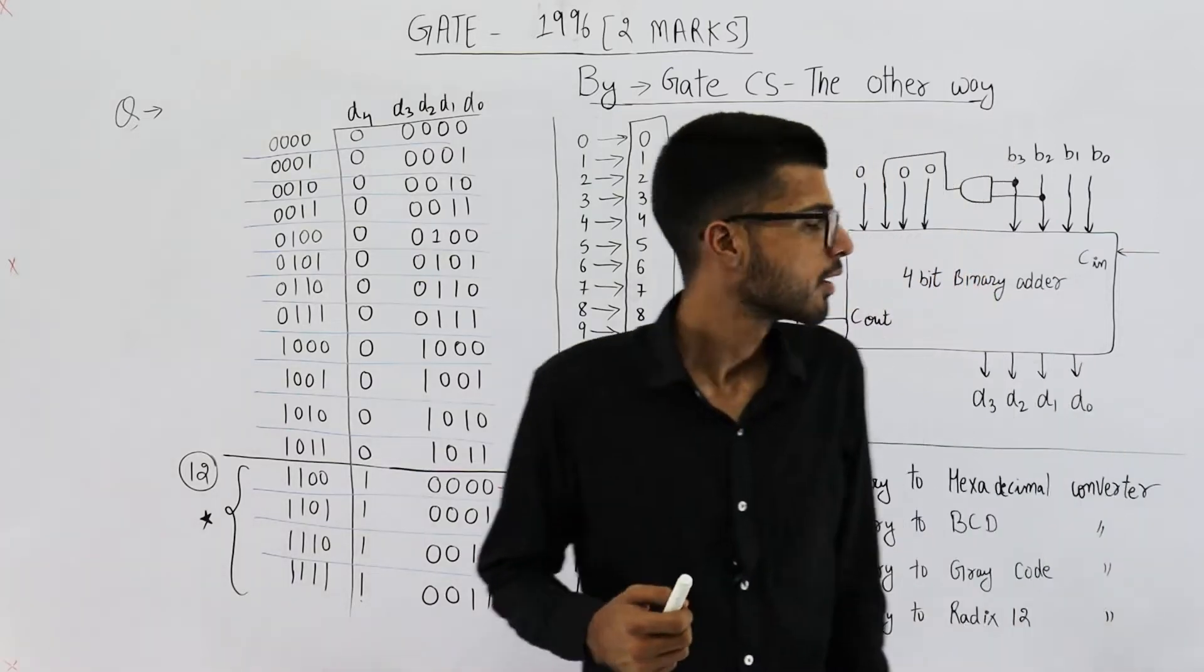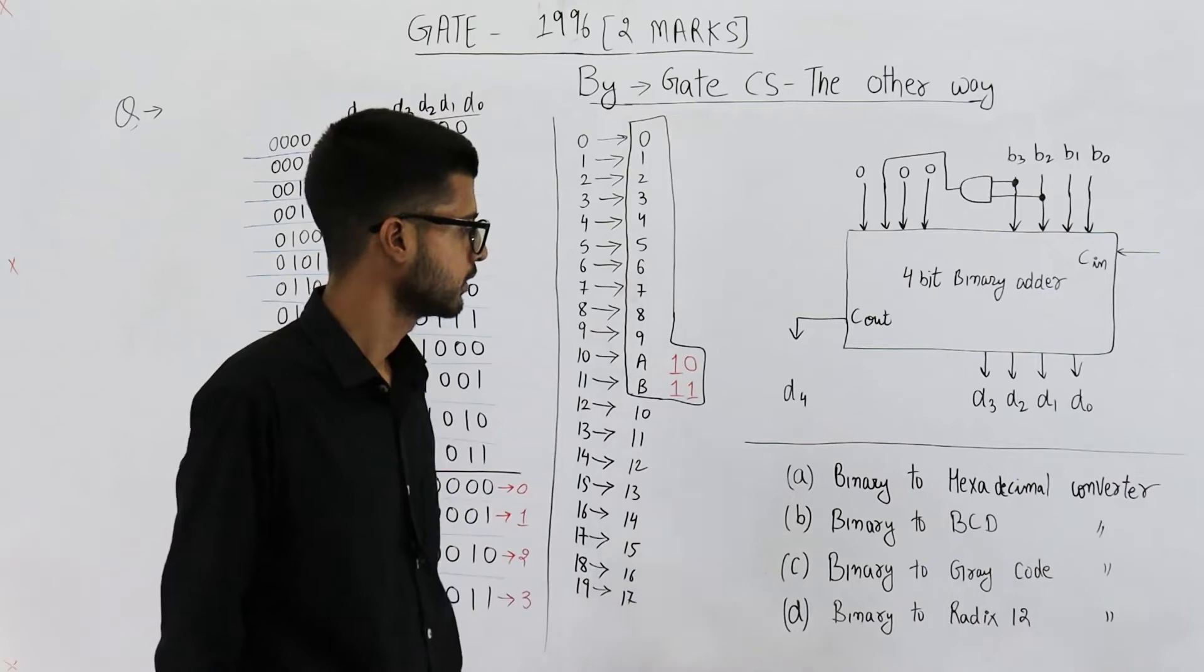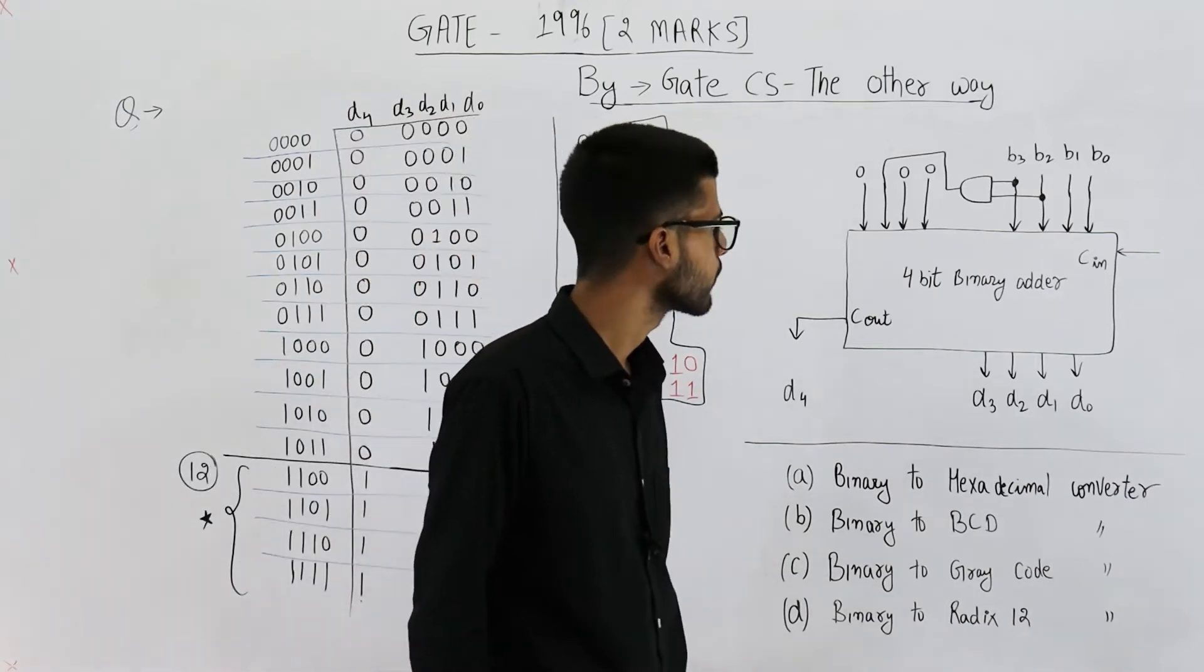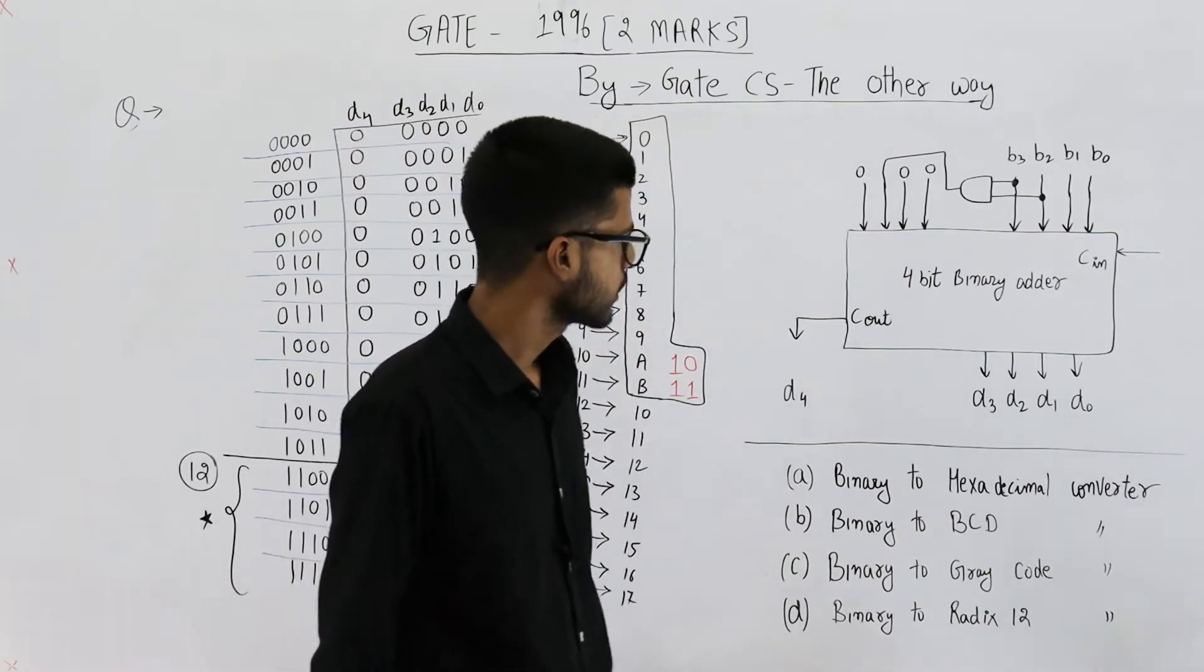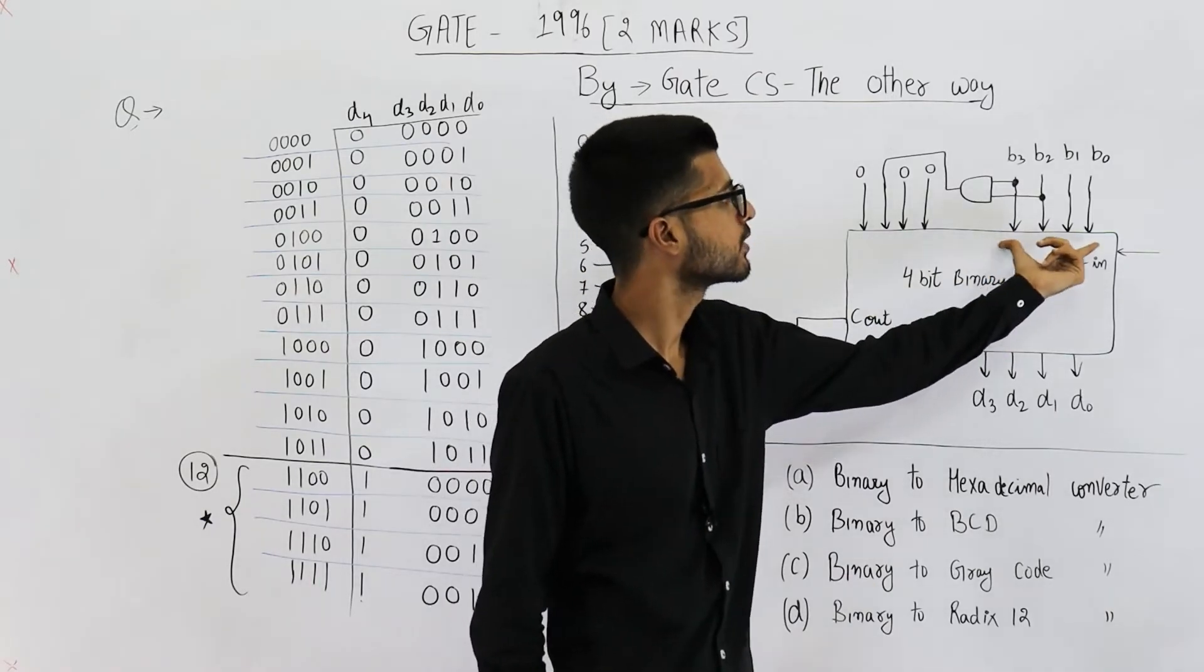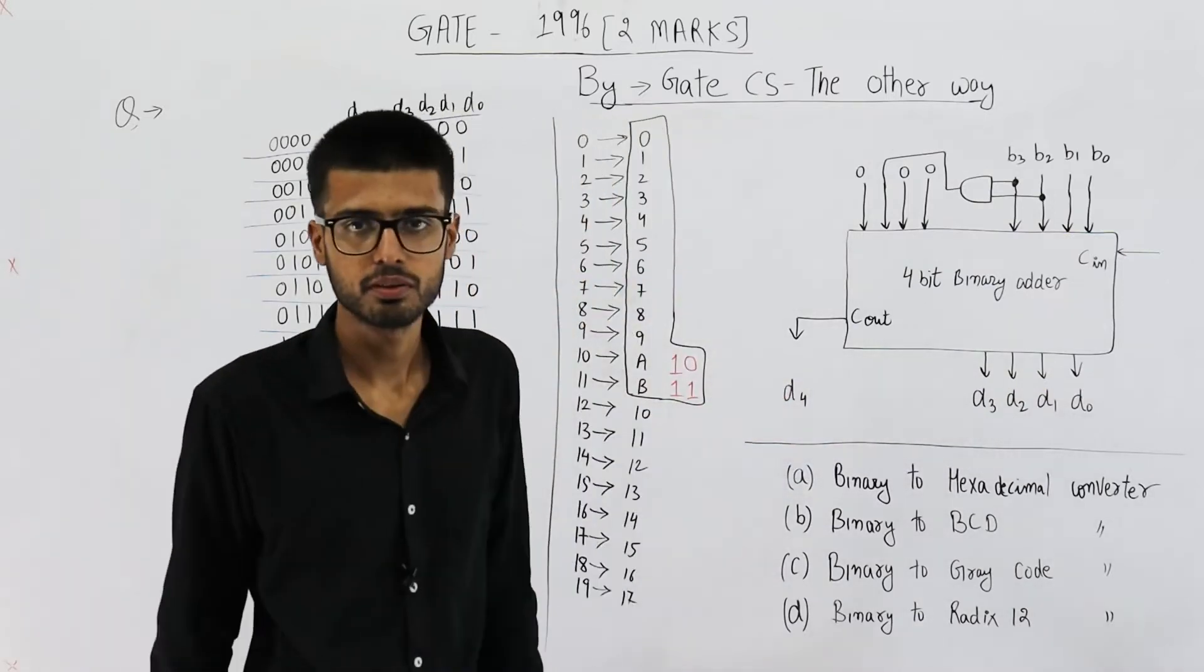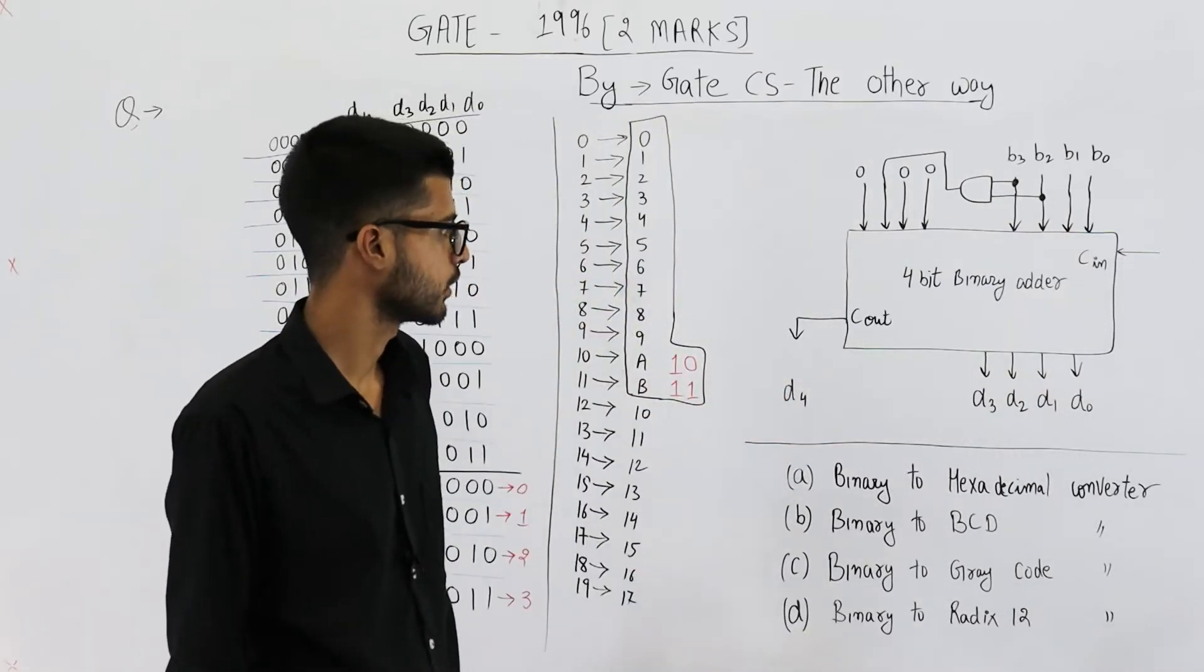They have given you this circuit, this one, and they are asking what does this circuit implement? They have given you these four options. So in this circuit, you have a 4-bit binary adder. Its input is this 4-bit number and output is this 5-bit number. Let us analyze what is this circuit doing.